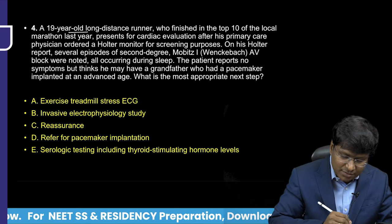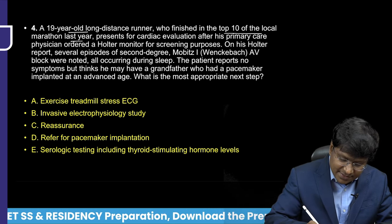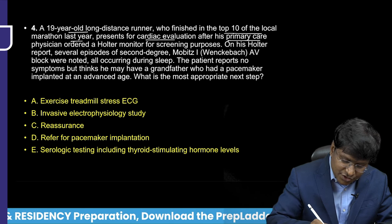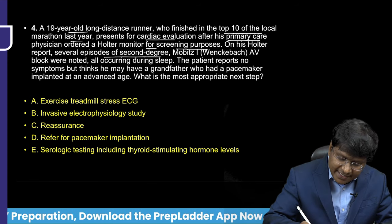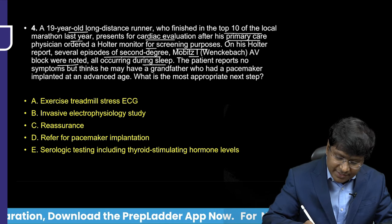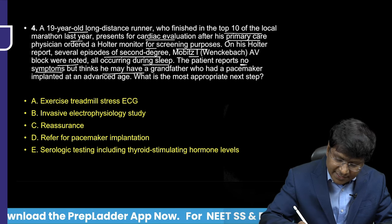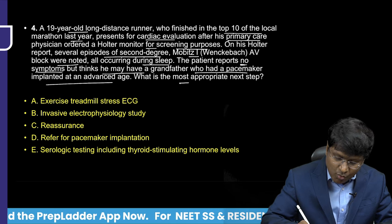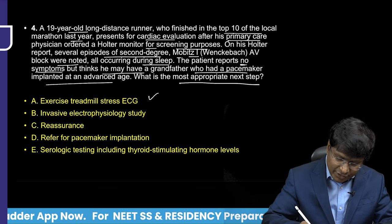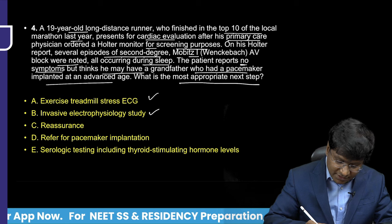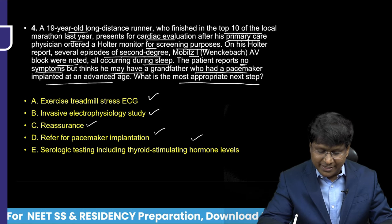Fourth question: A 19-year-old long-distance runner who finished in the top 10 of a local marathon presents for cardiac evaluation. His primary care physician ordered a Holter monitor for screening. The Holter showed several episodes of second-degree Mobitz type 1 AV block, all occurring during sleep. The patient reports no symptoms but mentions a grandfather who had a pacemaker. What is the most appropriate next step? Options: exercise treadmill stress ECG, invasive electrophysiology study, reassurance, pacemaker implantation, or serological testing including TSH levels.